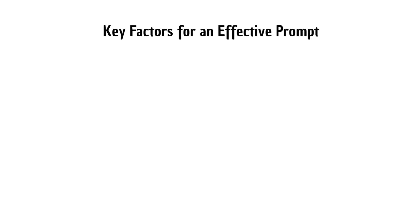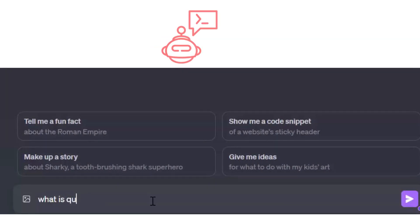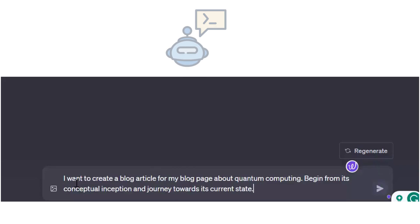Key factors for an effective prompt, number one is context. More context or background information you provide is better. For example, a basic prompt will look like this: What is quantum computing? Refined prompt: I want to create a blog article for my blog page about quantum computing. Begin from its conceptual inception and journey towards its current state.